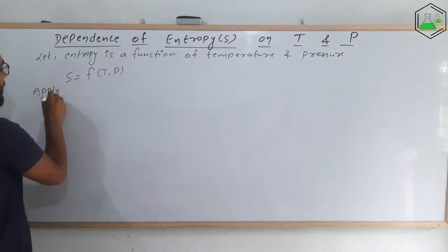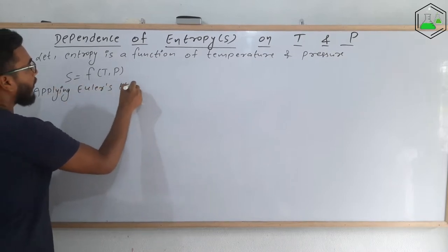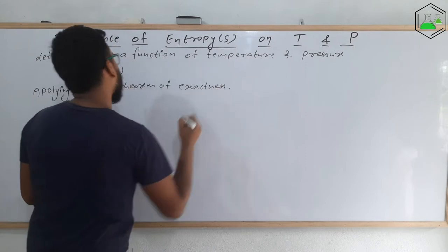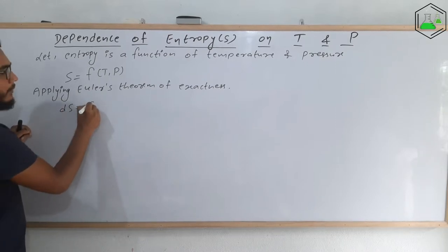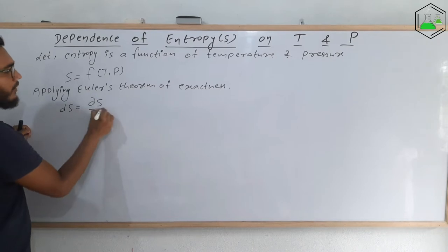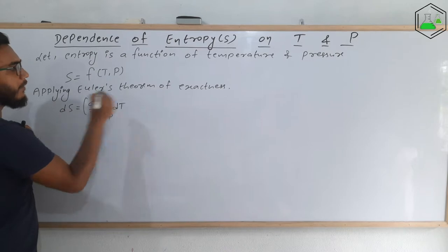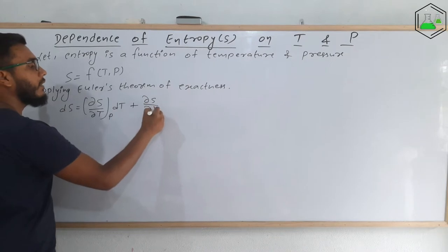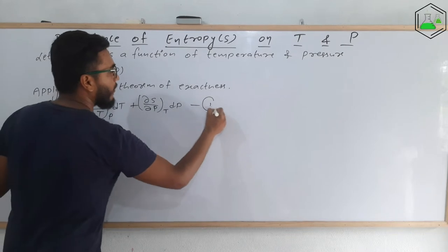Applying Euler's theorem of exactness, on the left side we have the complete derivative: dS = (∂S/∂T)_P · dT + (∂S/∂P)_T · dP. Let us consider this to be equation number 1.